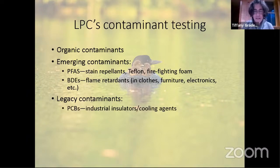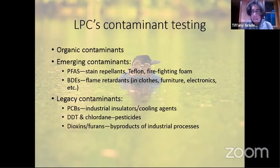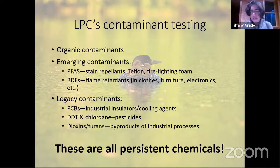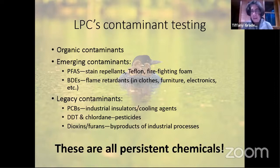Legacy contaminants include PCBs, used as industrial insulators and cooling agents; DDT and Chlordane, which are both pesticides; and dioxins and furans, which are byproducts of various industrial processes. An important thing to remember is that these are all persistent chemicals — they stay in the environment for a very long time. Even breakdown products are toxic and persistent. DDT was banned in 1972, but it's still around. Once these contaminants are in the environment, they don't go away. This is a very problematic group of contaminants.